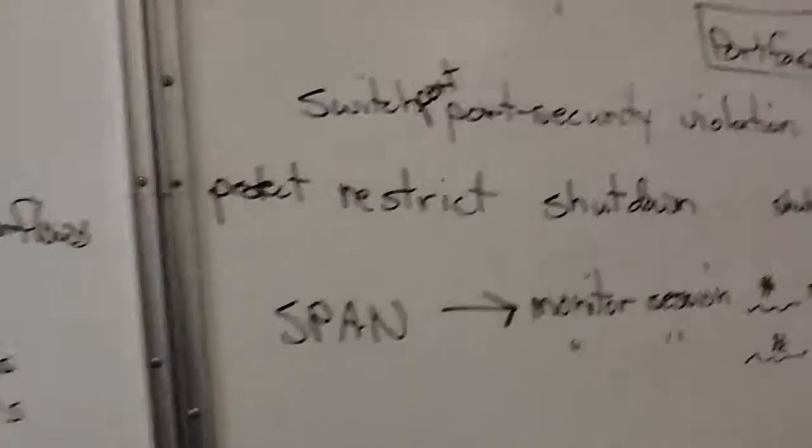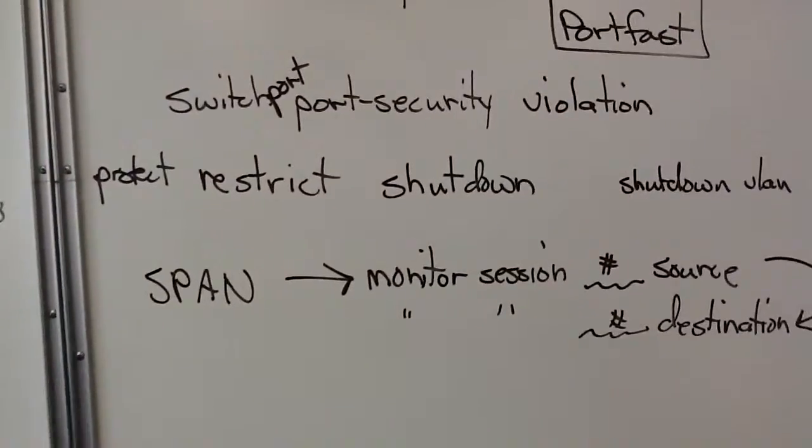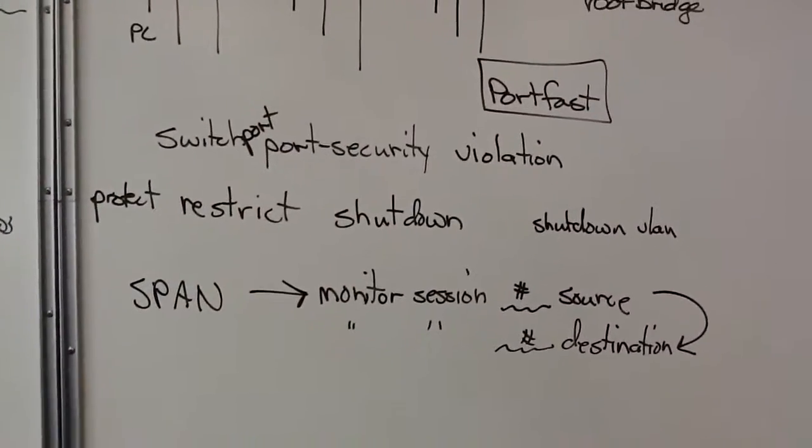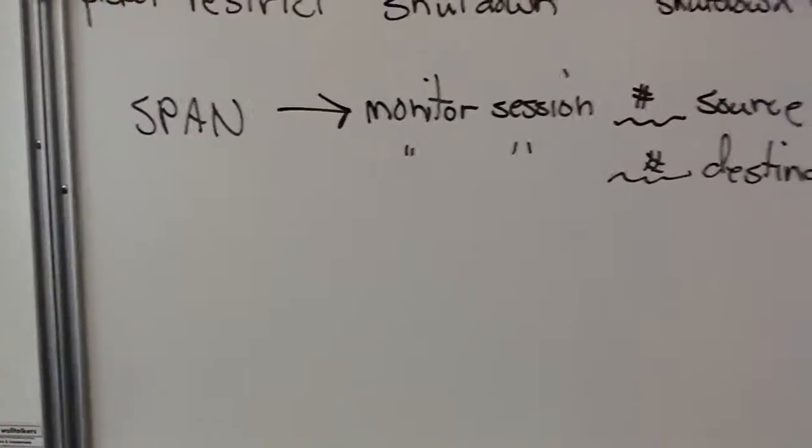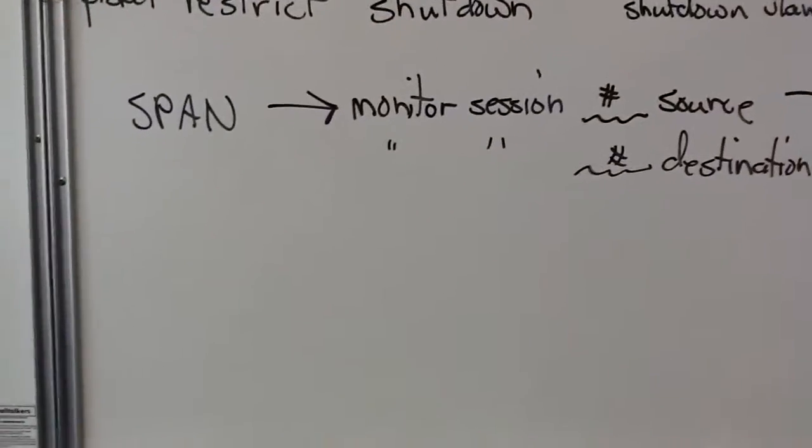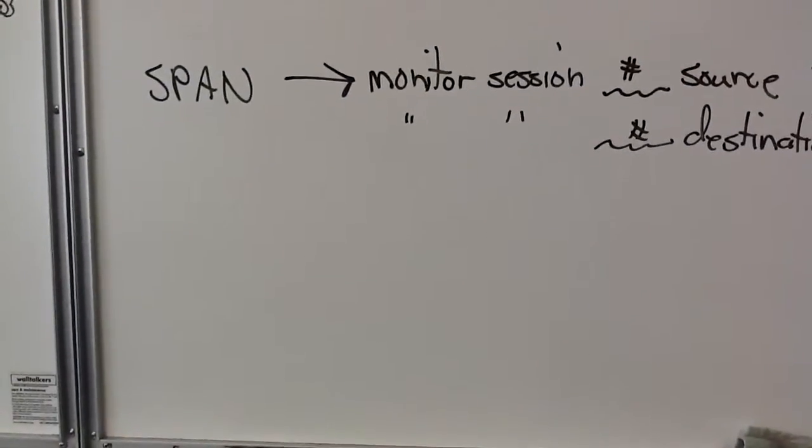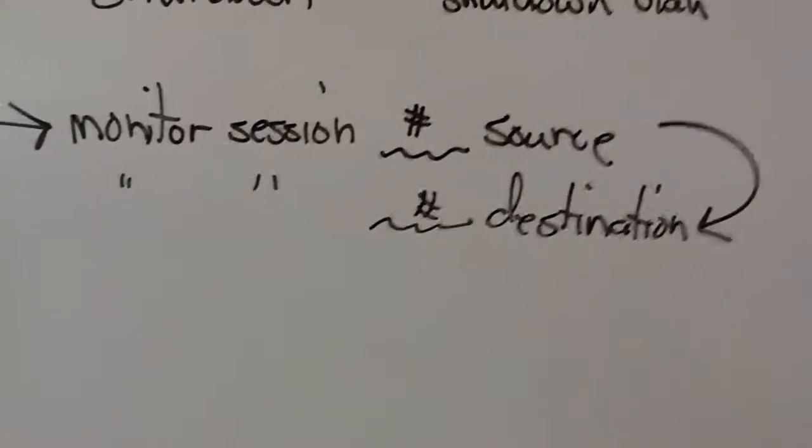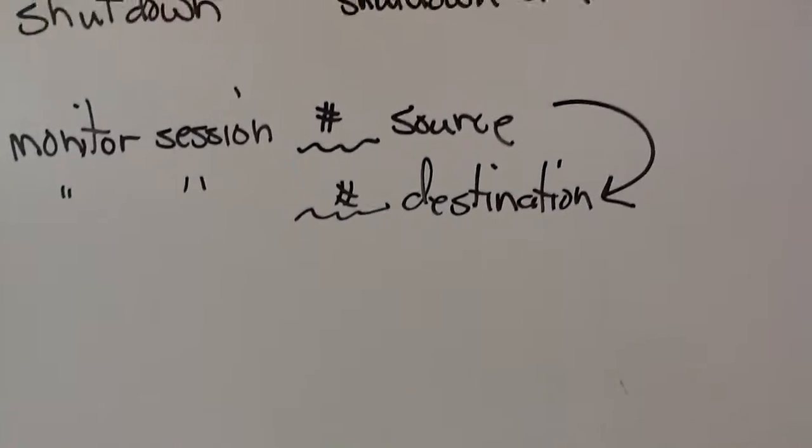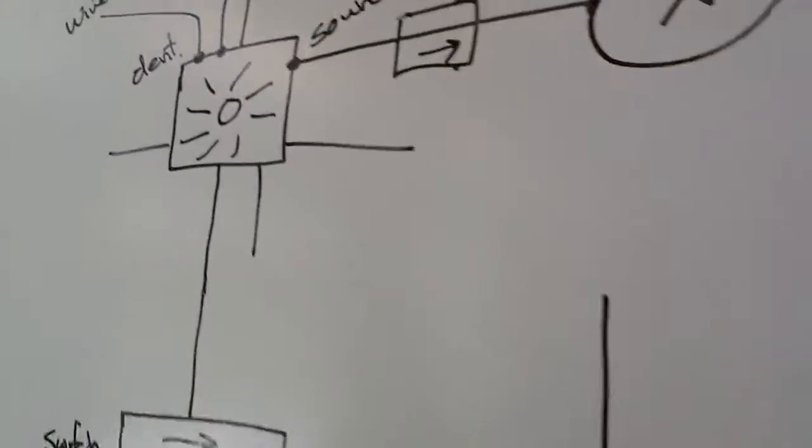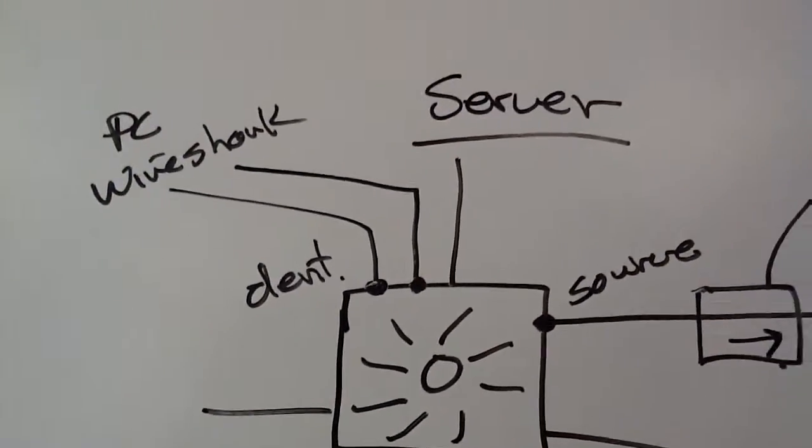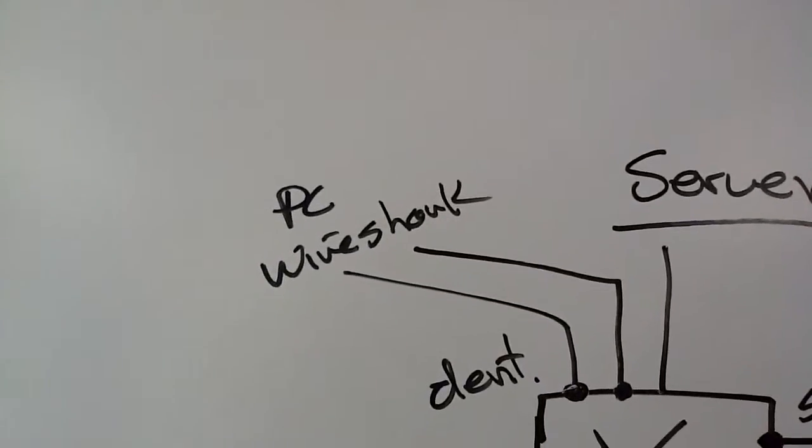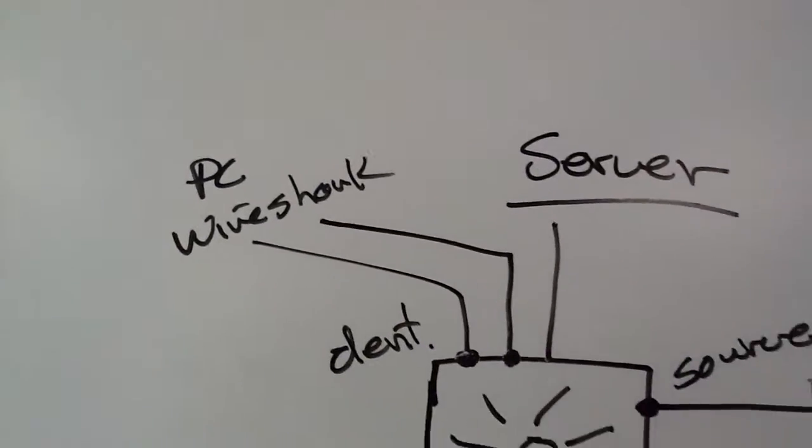We talked all about port security and we reviewed that. And then we also talked about monitoring a port source and destination. We can take the information from the source and send it to the destination. So here we did an example of traffic coming in the source. It can be sent out to the destination. You can run Wireshark or some other software to collect that data.